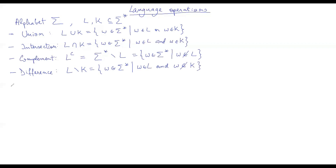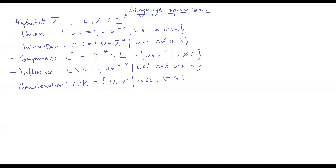We also define the concatenation of two languages, written L dot K, or sometimes simply LK. Remembering that concatenation was defined on words, LK is simply defined as the set of all concatenations UV where U is in L and V is in K.